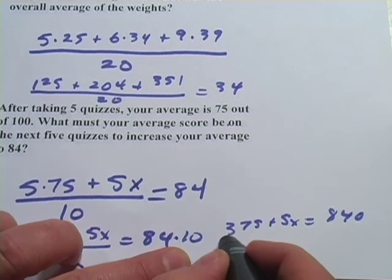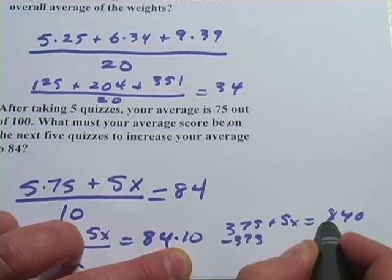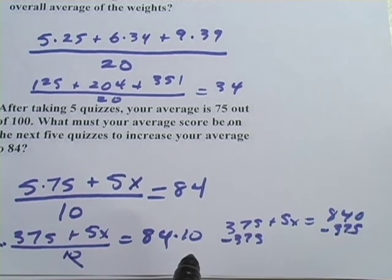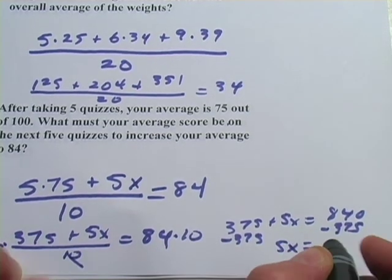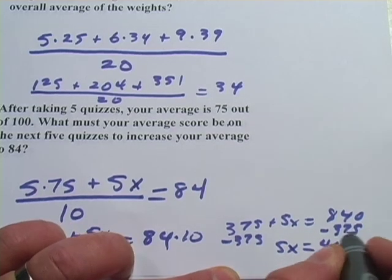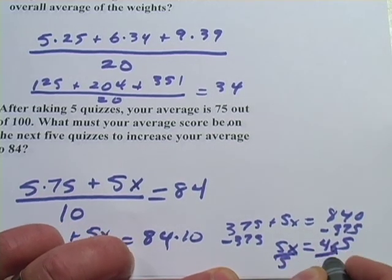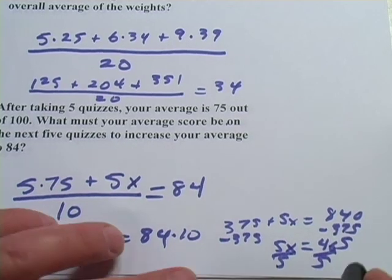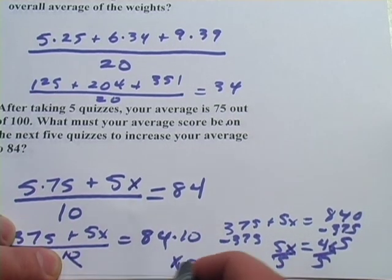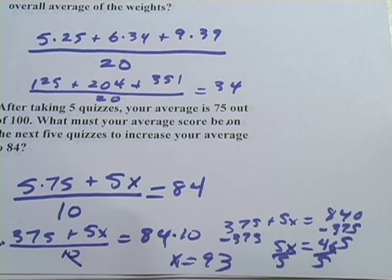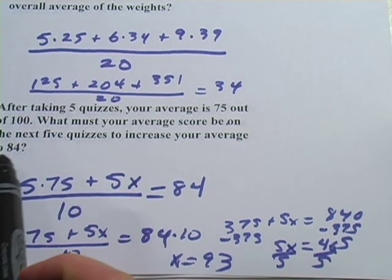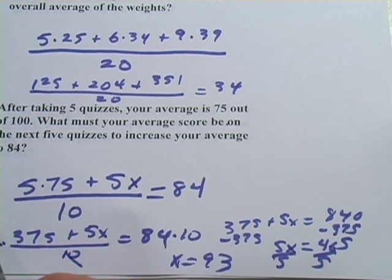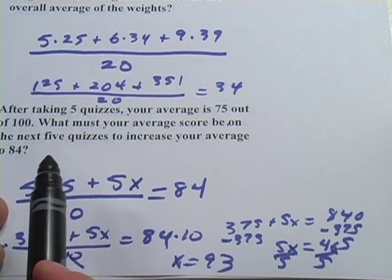Then I simply subtract 375 from both sides, and I get 5x over here, and 465 over here. And to solve for x, I simply divide by 5, and we get x equals 93. So that means you have to score a 93 on the next five quizzes, or an average of 93, in order to raise your average up to 84. So that's a little bit about overall average.